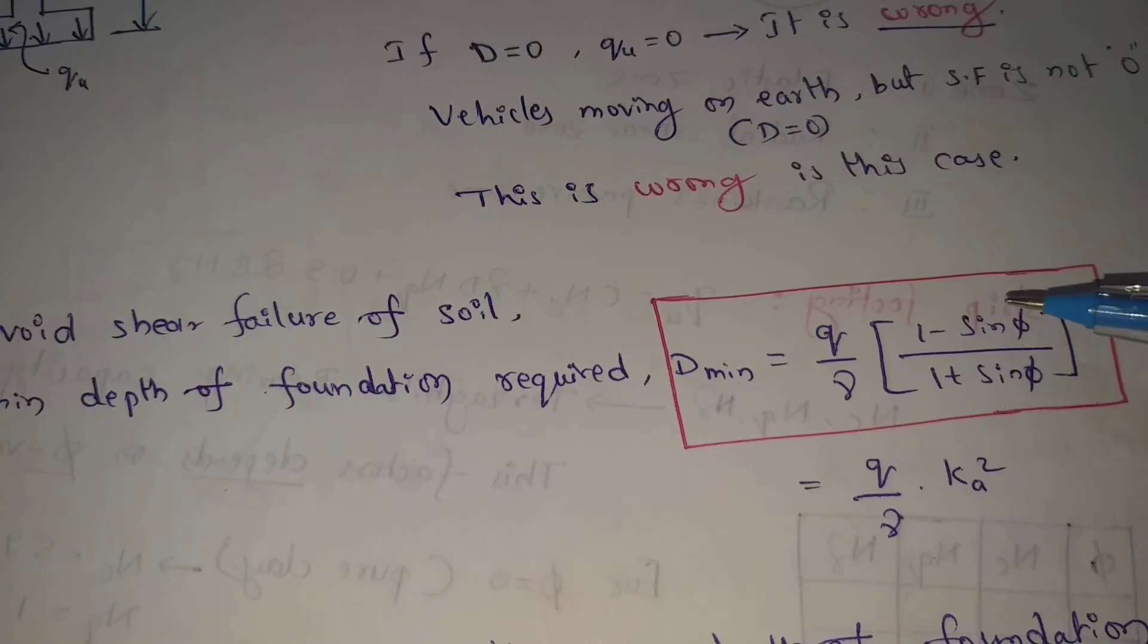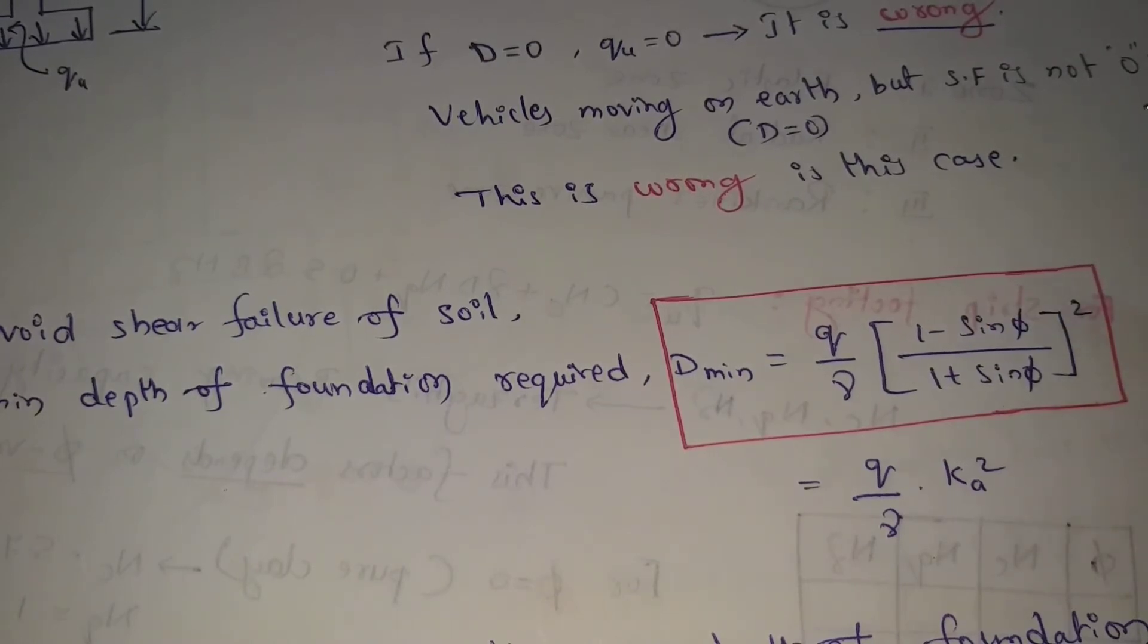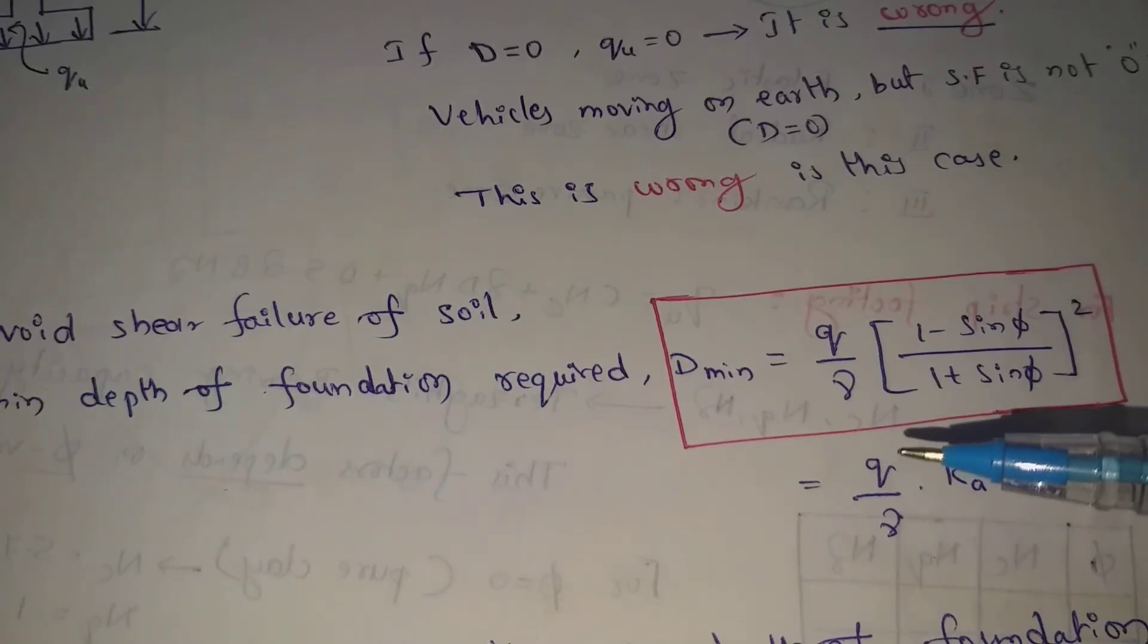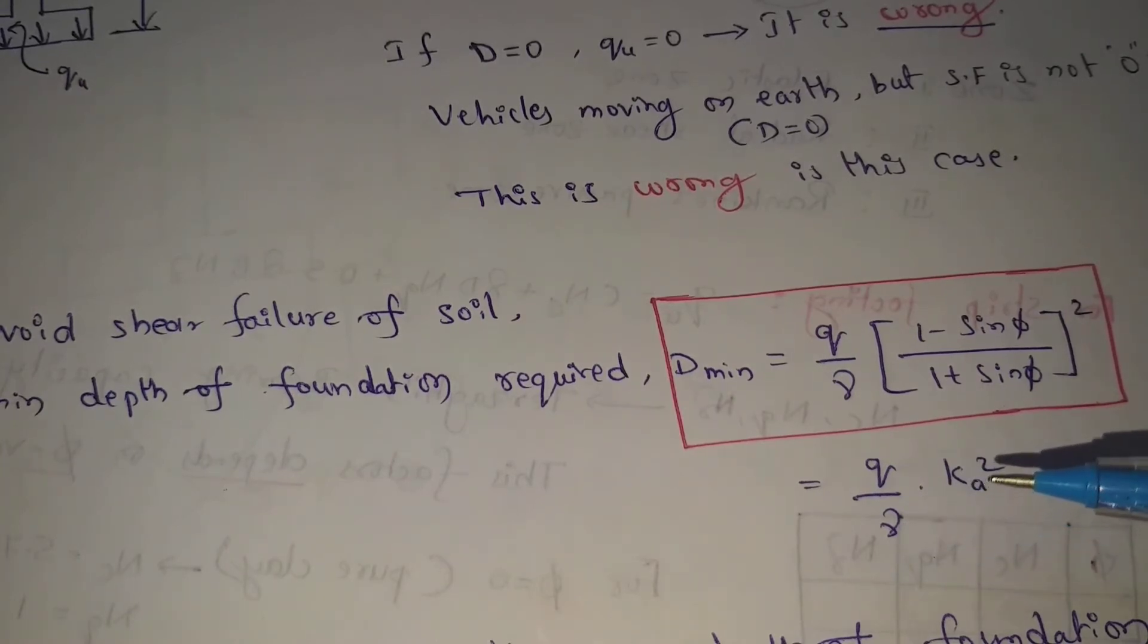This equals Q by gamma into KA whole square. Here Q is intensity of loading, gamma is unit weight of soil, KA means coefficient of active earth pressure.